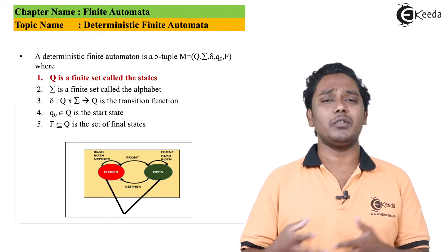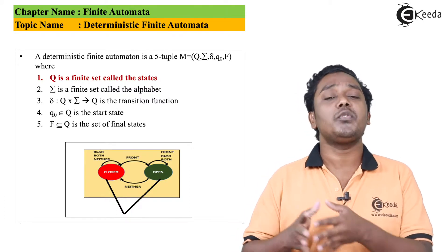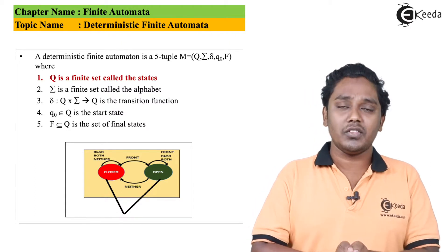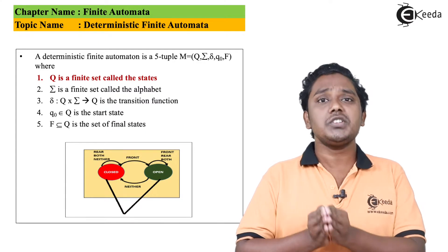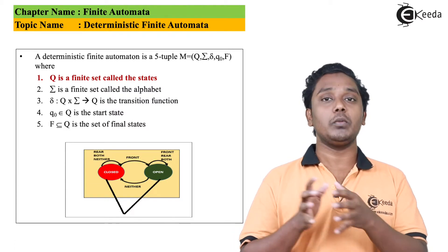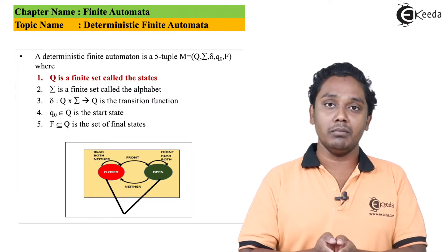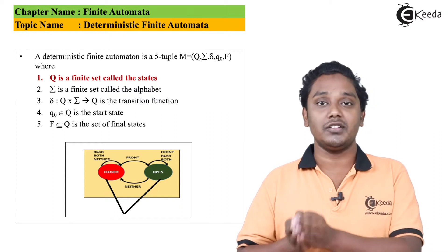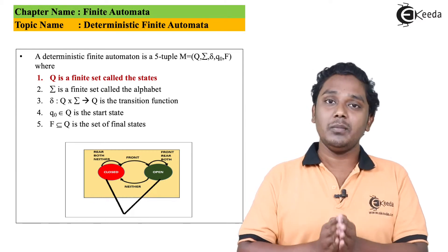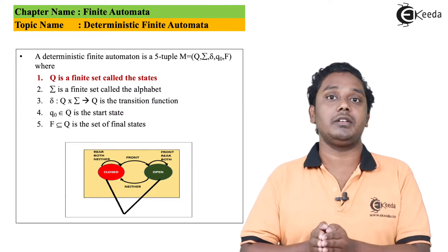The alphabet is the set of symbols which will be considered as input to the particular system. In the case of the automatic door, the information coming from the sensor could be treated as an alphabet. Given the automata in a particular state and some input symbol coming in, the automata will process that symbol and switch its state from one state to another. For example, in the automatic door it was switching from closed to open or from open to closed. This switching of state is called a transition.